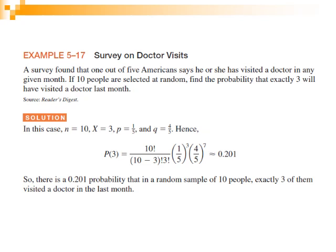First, we verify the requirements from previous lectures. The experiment has two outcomes: visited the doctor or did not visit the doctor — success and failure. We can consider it a binomial situation because we have two groups. We select a sample of 10 persons and want to determine the probability distribution for who visited the doctor.